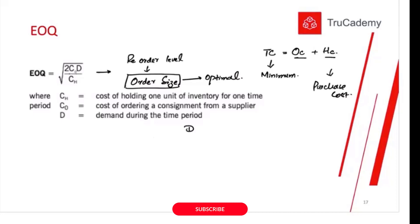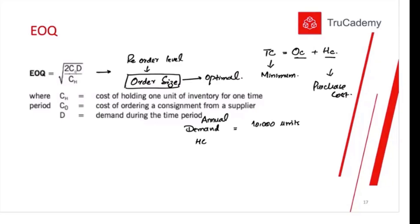Let me give you an example. My annual demand for the year is 10,000 units. The holding cost per unit is $1.50 per unit, and the ordering cost per order that I'm going to place is $5 per order.